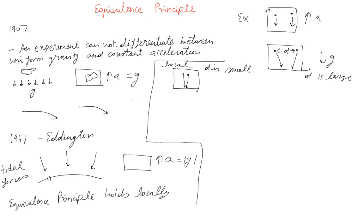Then locally where gravity is not changing much we can always say that you cannot do an experiment which can differentiate between the gravity and constant acceleration.